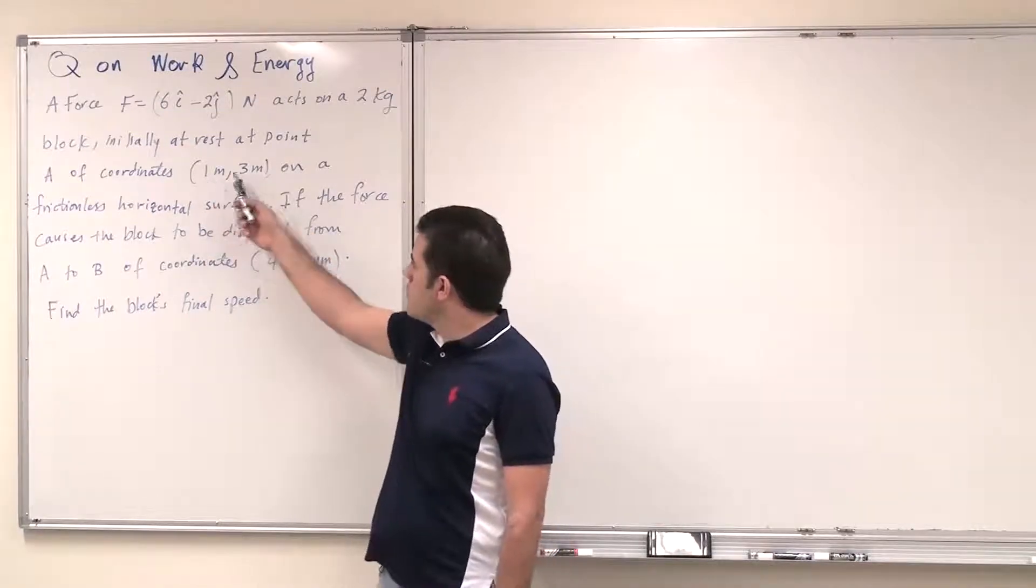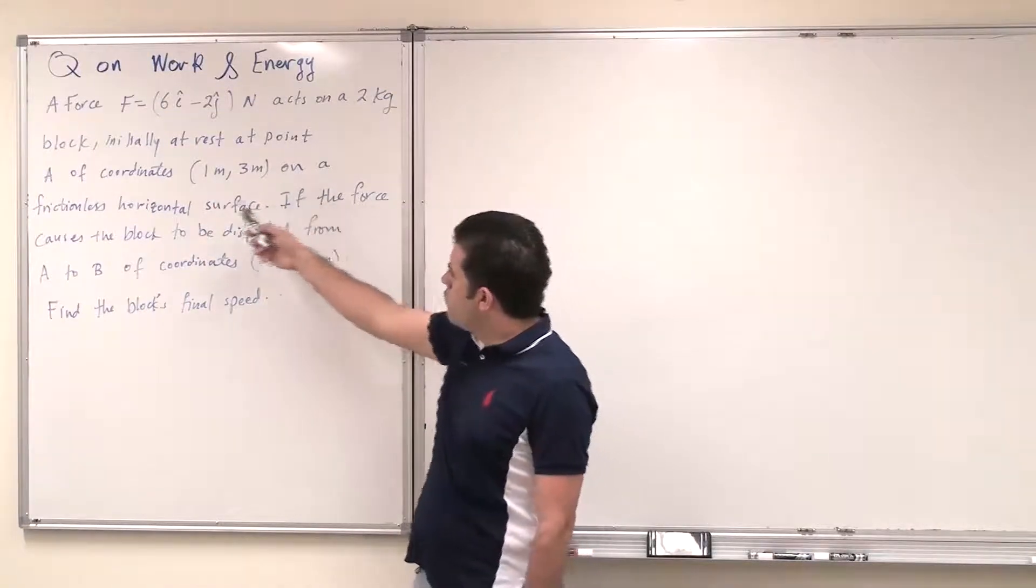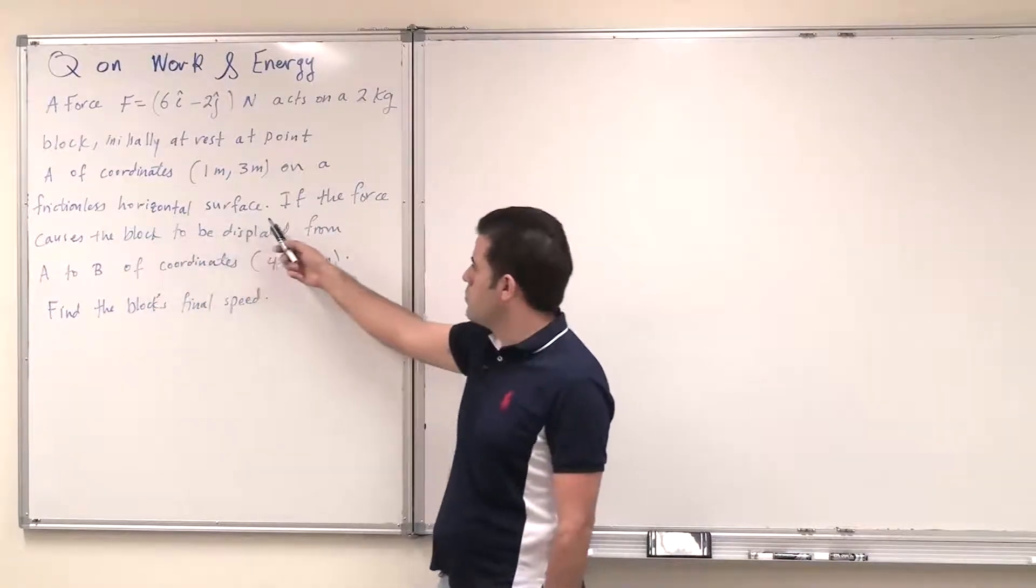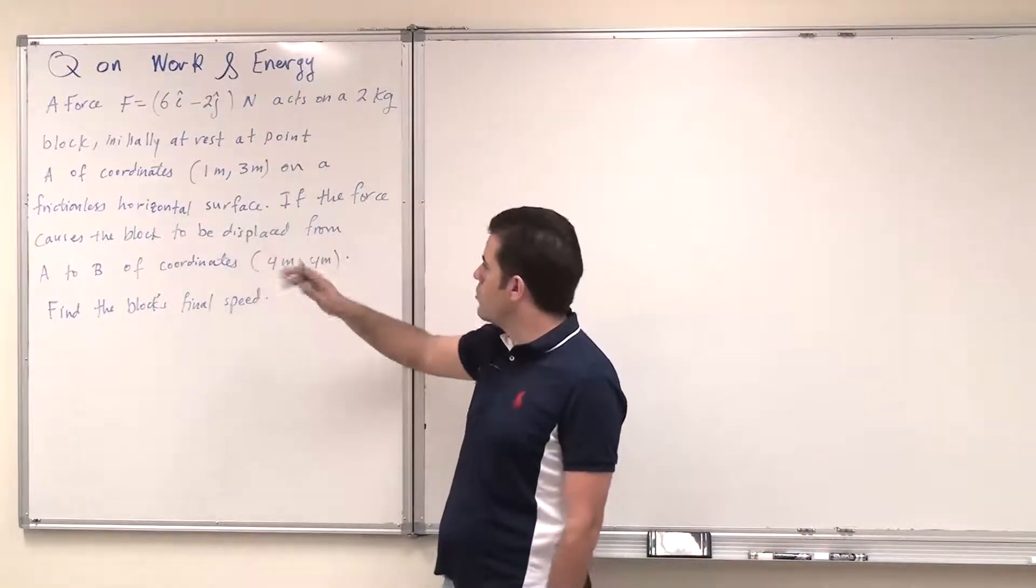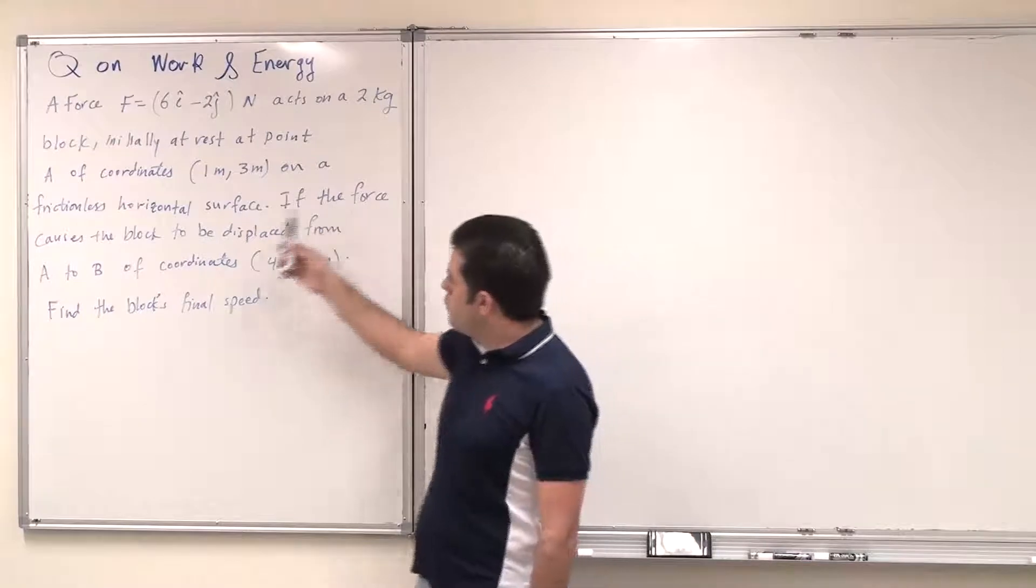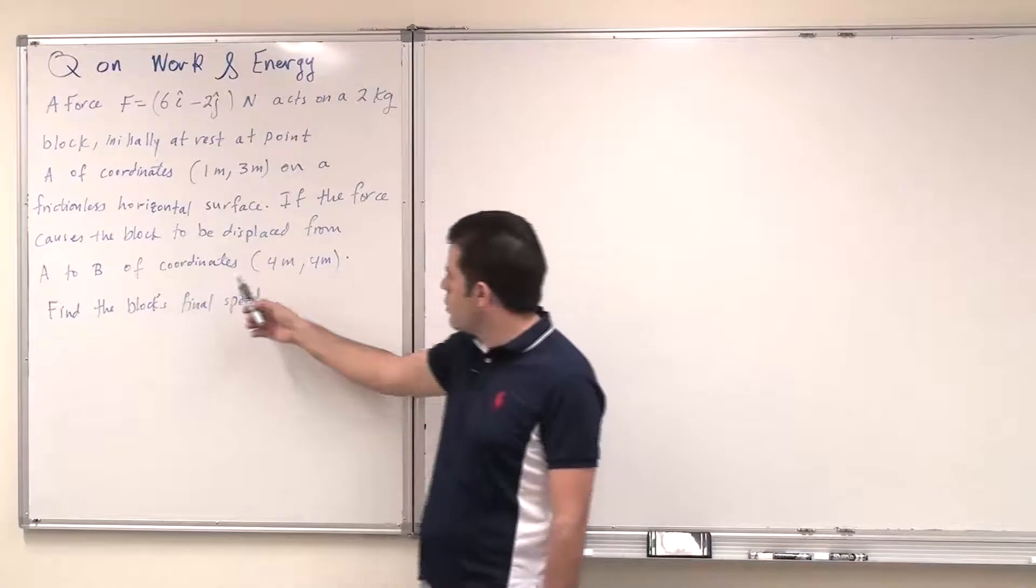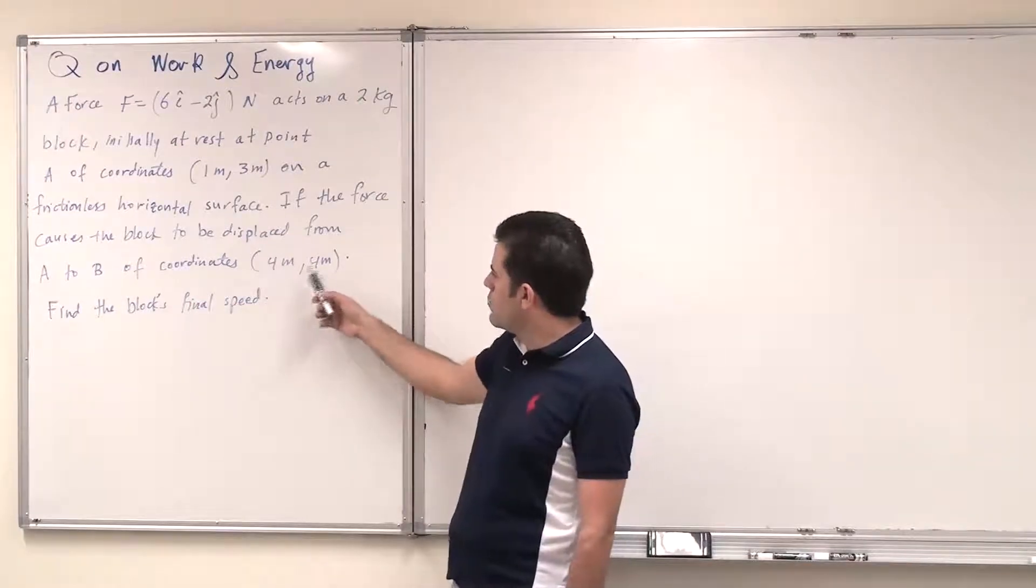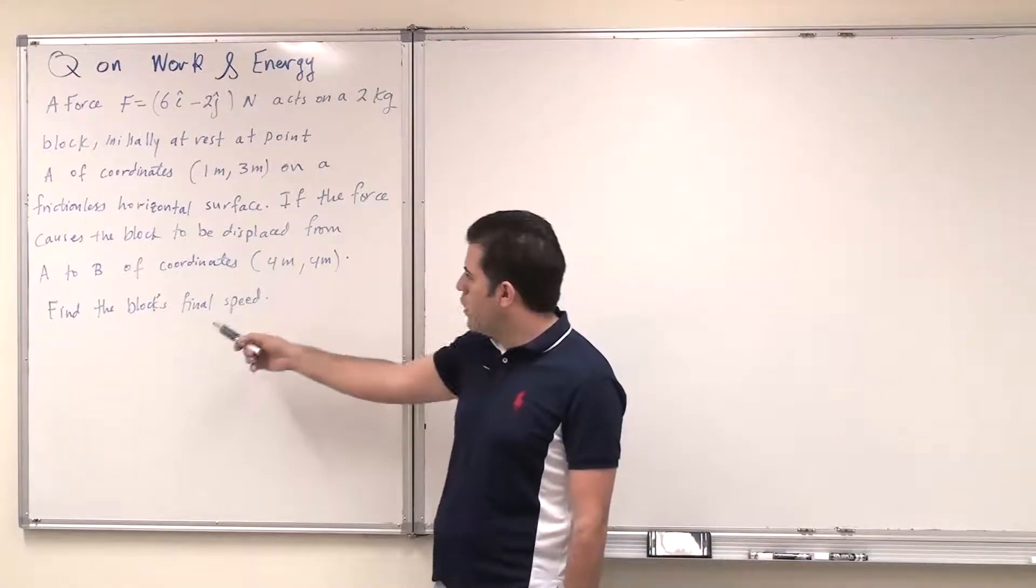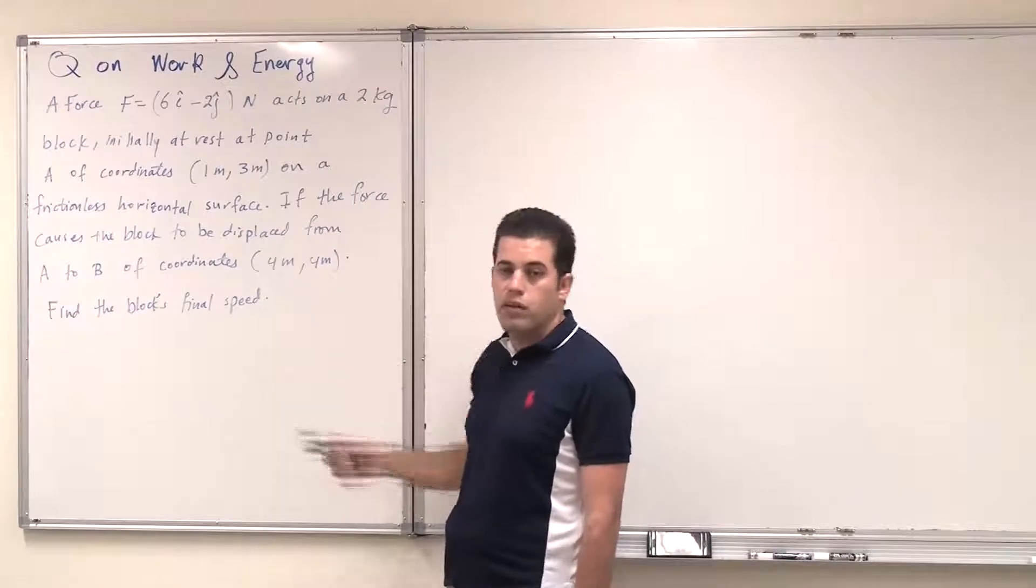This is the x, this is the y on an xy coordinate. On a frictionless horizontal surface, which means all the forces are conservative, if the force causes the block to be displaced from point A to B of coordinates four meters x and four meters y, find the block's final speed.